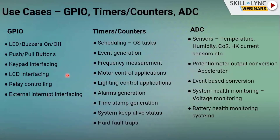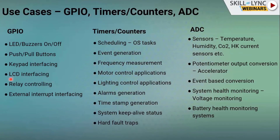Use cases by peripheral: GPIO is used for LEDs, push-pull buttons, keypad interfacing, LCD interfacing, relay controlling, and external interrupt interfacing — for example, triggering operations on a falling edge of a GPIO pin.